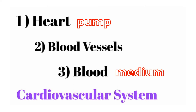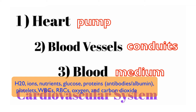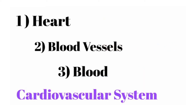Blood vessels are the conduits or pipes that blood flows through. Blood is the medium through which things flow — it is composed of water, ions, nutrients, glucose, plasma proteins such as antibodies or albumin, blood cells (otherwise known as formed elements) which include platelets, white blood cells, and red blood cells, and gases: oxygen and carbon dioxide. A lot of the discussion in this lecture will revolve around oxygen and carbon dioxide to keep things on the simpler end of the spectrum.